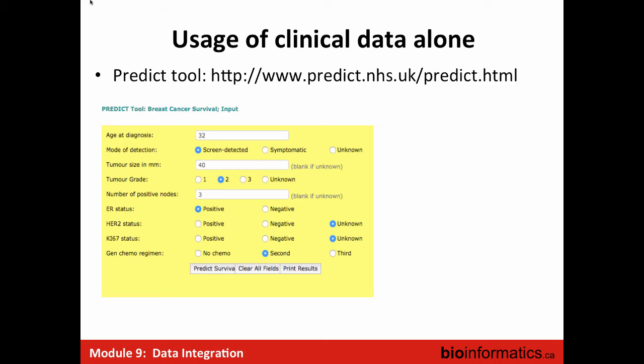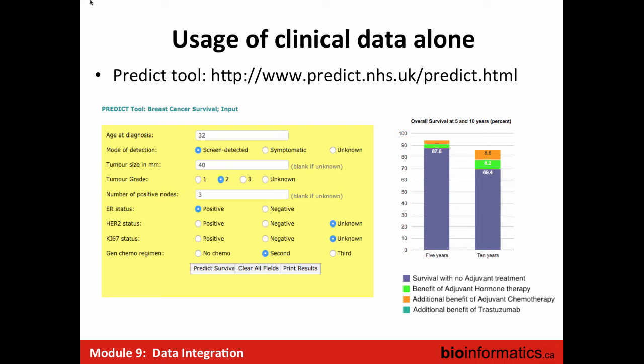There are publicly available tools that take this data and do inference. This is called PREDICT — a tool for breast cancer available online. You put in information about the patient including age, status, chemo regimen, and grades, and it gives you estimates of the probability of survival after five and ten years, and the benefit of adding different kinds of therapies. In this case, it looks like chemo would be beneficial for this patient. The reality is the situation is more complicated, which is why the field of integration came about — not all patients with the same clinical variables will have exactly the same survival and outcome.